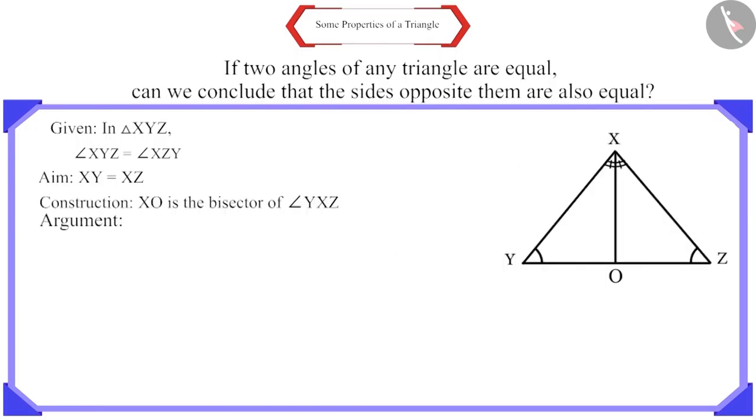Now, look at triangle XYO and triangle XZO. It's given that these two angles are equal. Here, we can write angle XYZ as XYO and angle XZY as XZO. Therefore, these will also be equal.